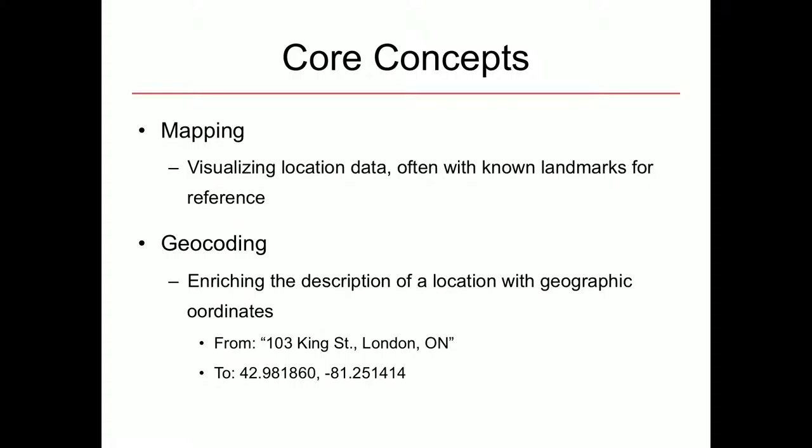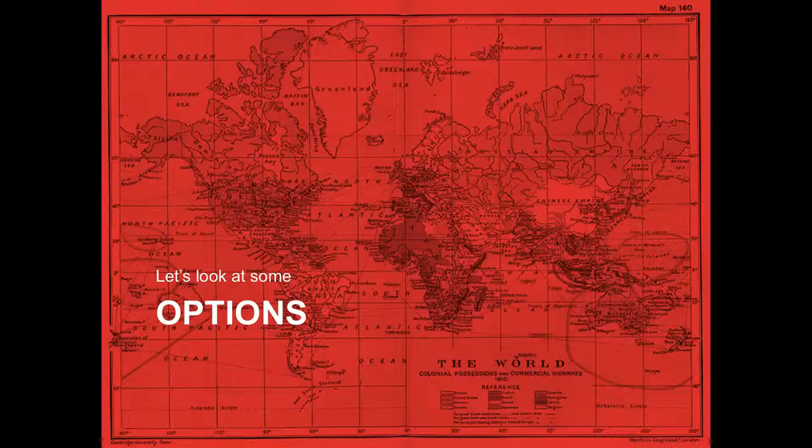Some core concepts we've already touched on: mapping and geocoding. Geocoding is really just taking how we describe something — the address — and turning that into data we can use to plot something on a map.